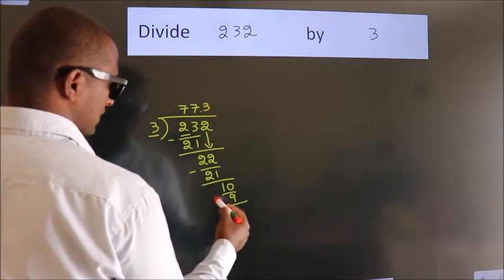Now we subtract. We get 1. After this, no more numbers to bring down. So what we do is, we put a dot and take 0.